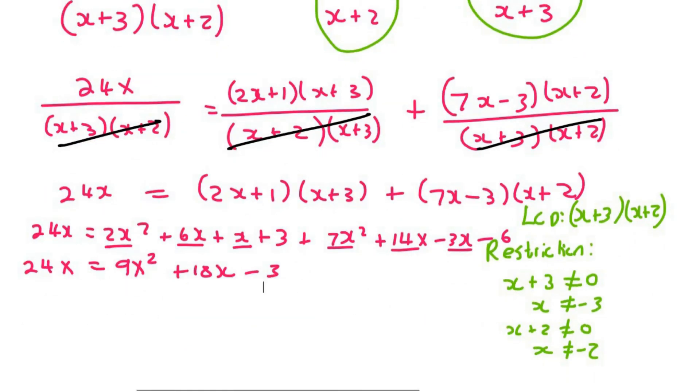Then I can bring the 24x over, so we end up with 0 equals 9x² plus 18x minus 24x minus 3. And so 0 equals 9x² minus 6x minus 3.